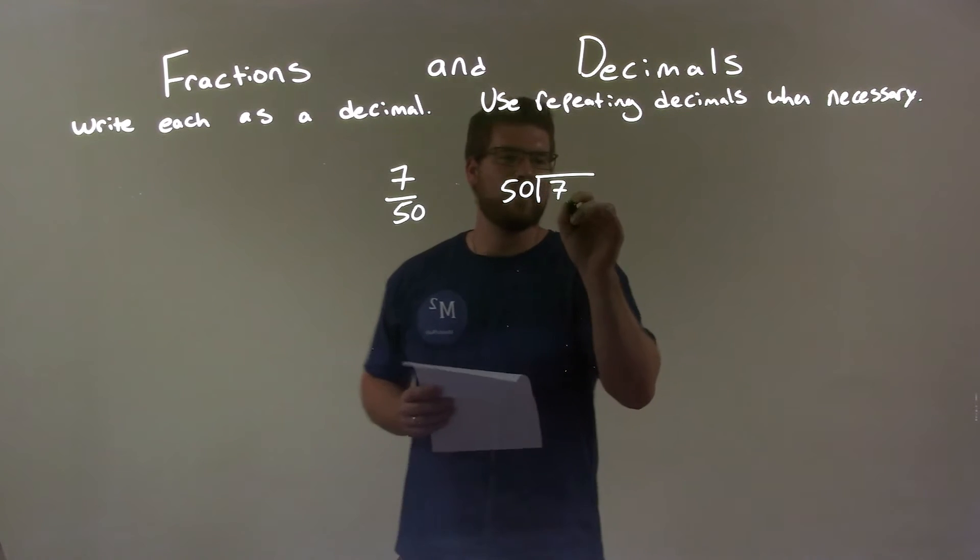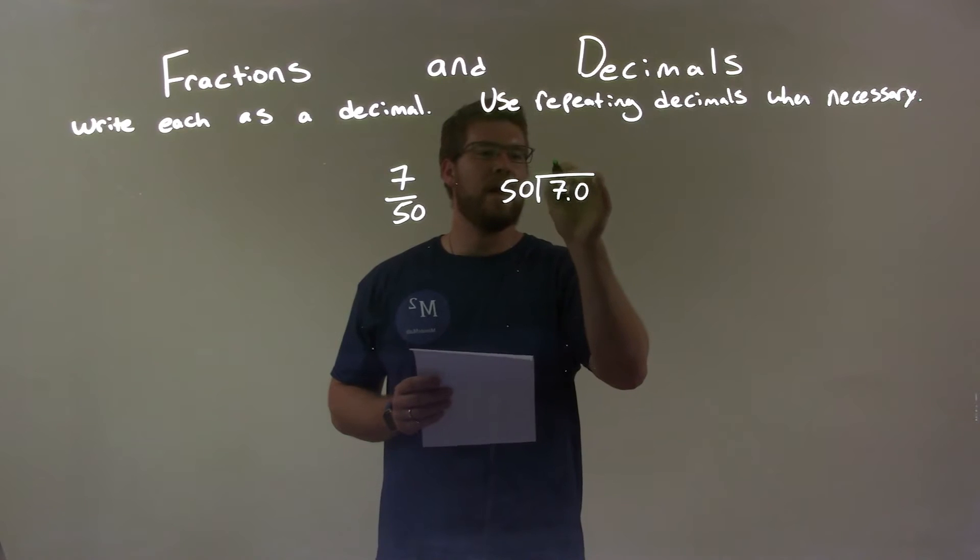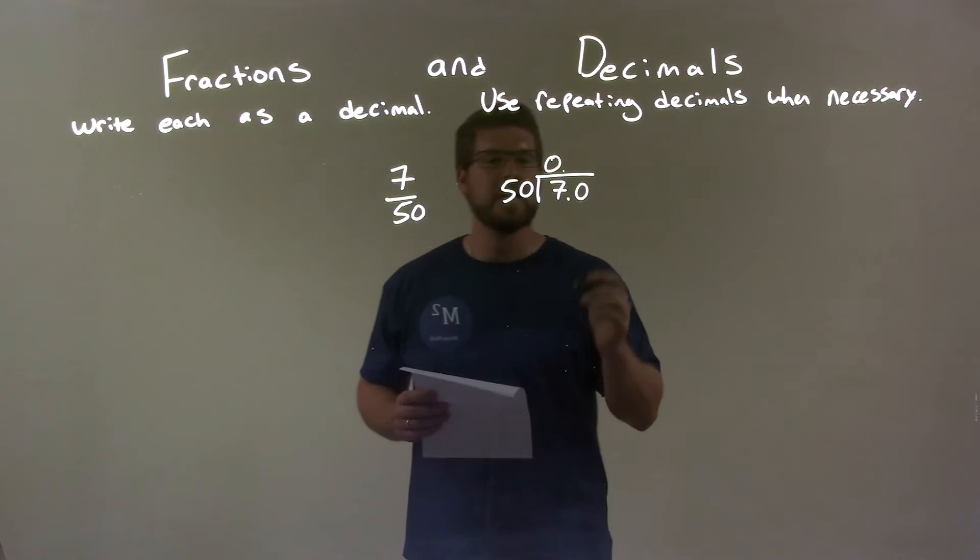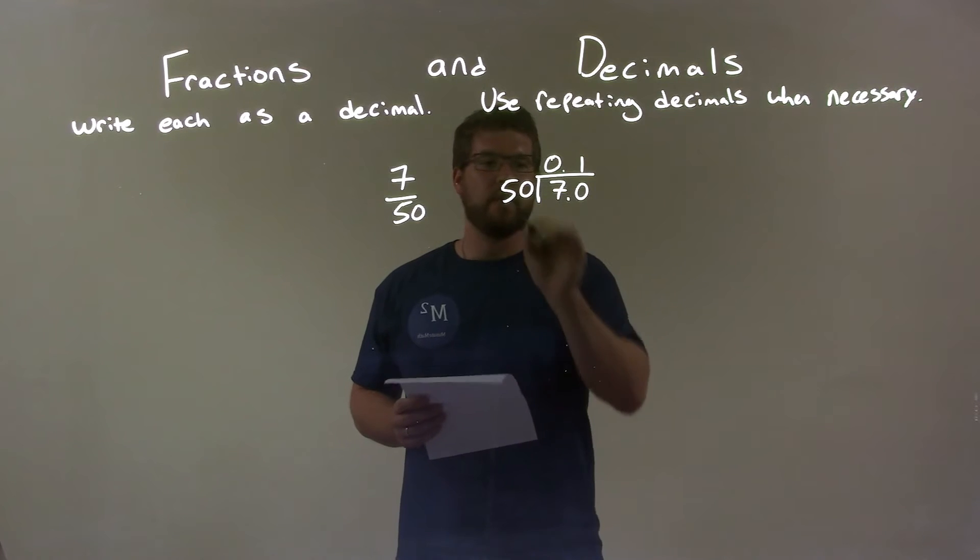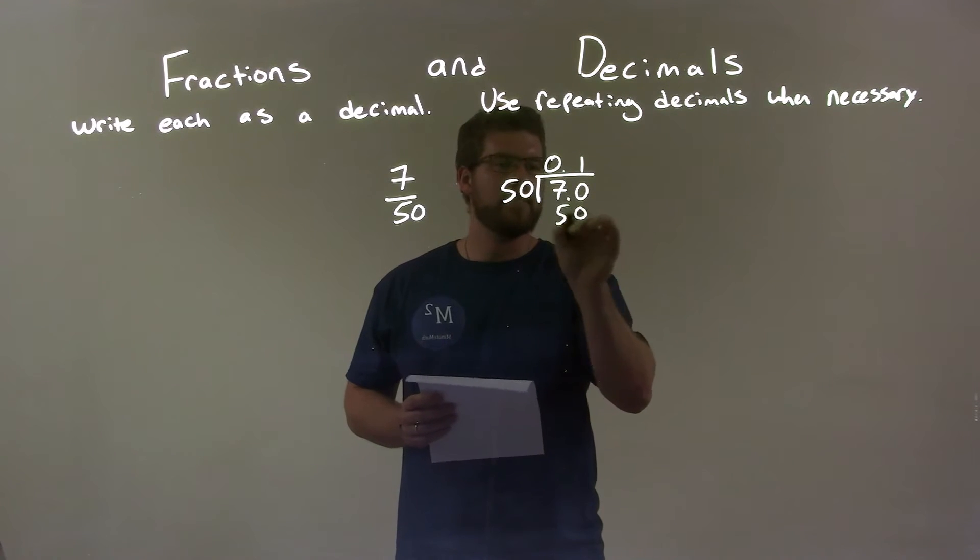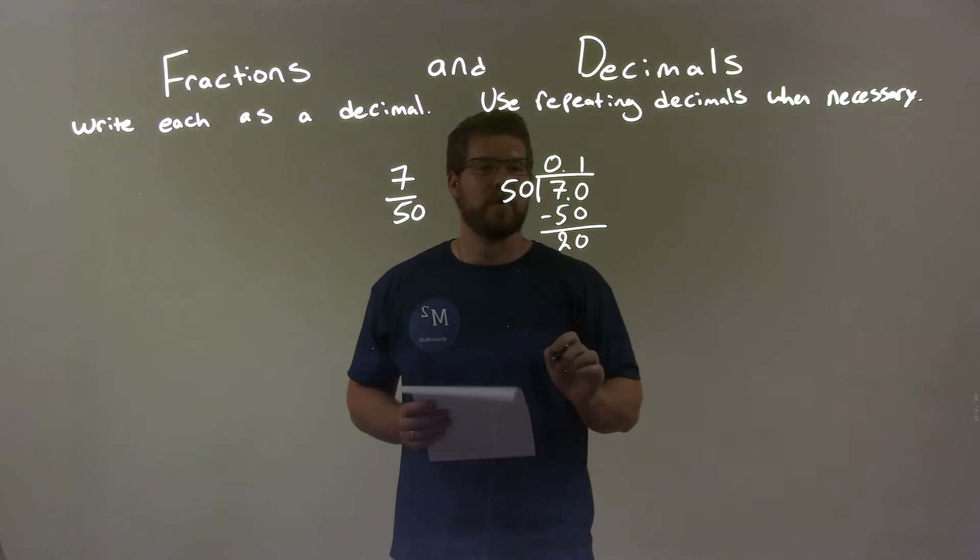Well, 50 doesn't go into 7, but 50 goes into 70, so we add another 0 there. How many times does 50 go into 70? Well, that's 1 time. 1 times 50 is 50. We subtract that and we get 20.